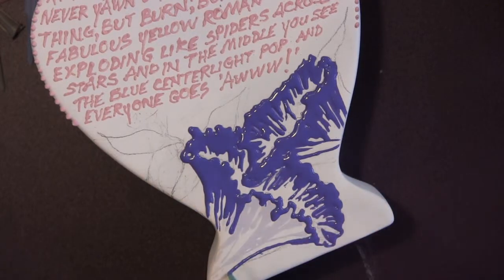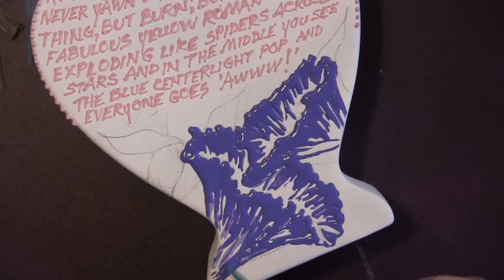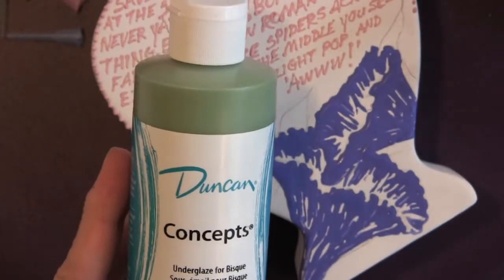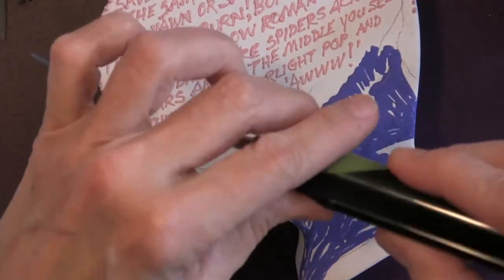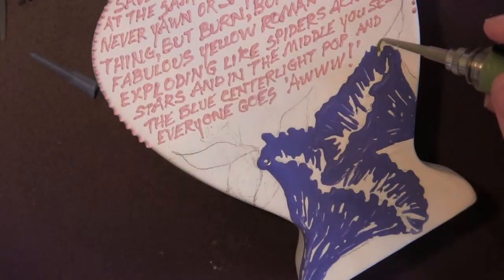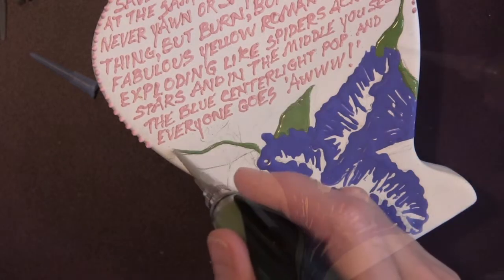Another glaze that I have here to try is called Concepts glaze and it's an under glaze. One to three coats I think is what it says, but because you can vary the amount of glaze that you put on this piece with the air pen, you can make those three coats in one application.